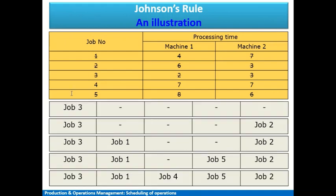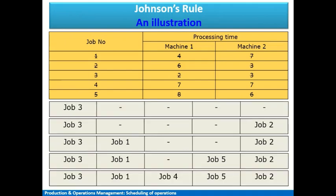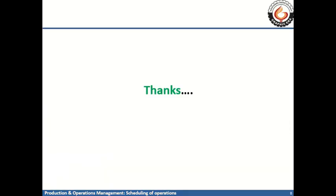This has also been illustrated in a step-by-step manner in the slide. Following those steps, we get the sequence three, one, four, five, two — which is the same sequence we derived. That was Johnson's Rule. Thank you for being a patient learner, and have a nice day.